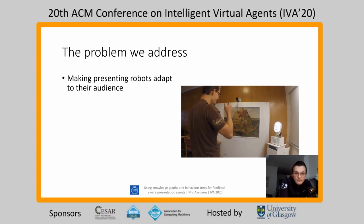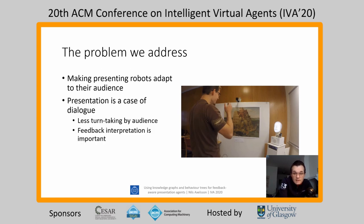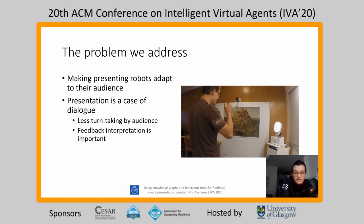In this paper we are trying to address the problem of how to create adaptive presenting agents. Presentation is a special case of dialogue — a sub-genre of dialogue. One party, the presenter, is expected to talk more than the audience, and the audience is not expected to take the turn a lot. It is important for the presenter to be able to interpret the feedback from the audience and adapt the presentation as a result.